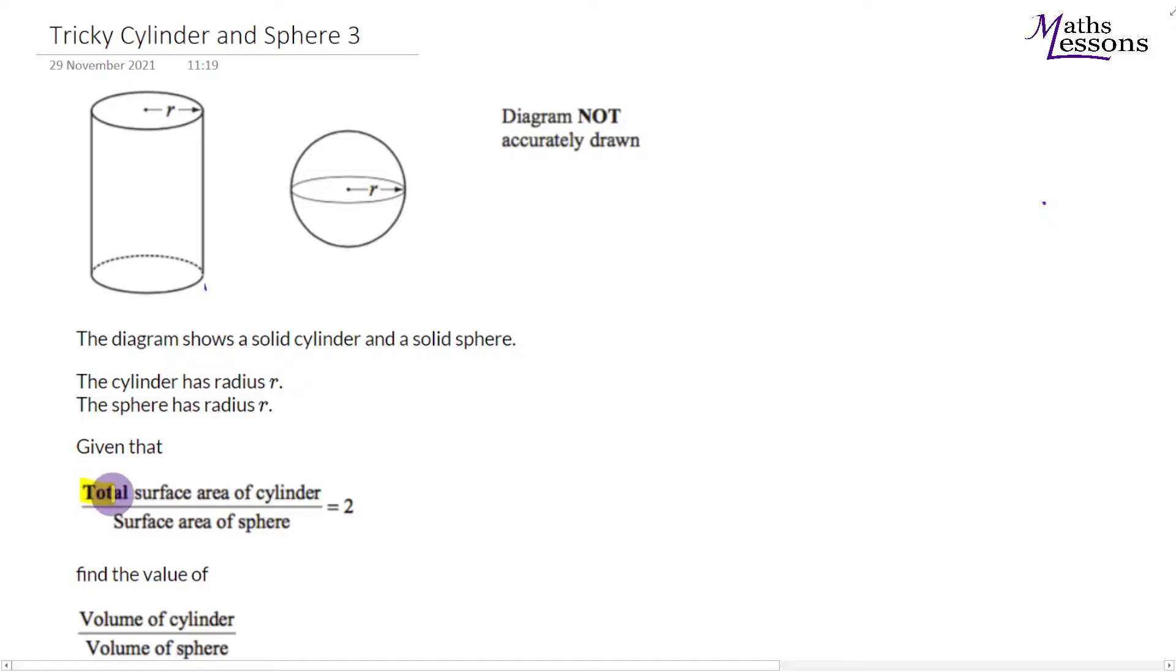Now the key thing to note is this: a lot of students forget total surface area of the cylinder involves the curved bit and the ends. So you've got pi r squared here, you've got pi r squared here, and then you've got the circumference times by the height. So that's two pi r h for here.